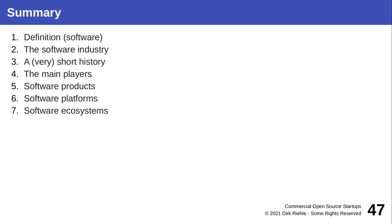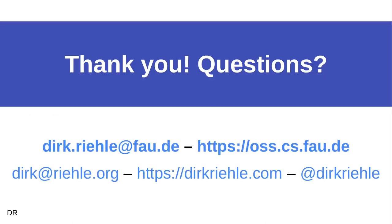So that's it for this first lecture. We talked about what software is and how it's provided by the software industry, its main players. We got a first glimpse at software products in general and different types — most notably platforms and applications, how together they form ecosystems, and how that is where the wars in the software industry take place. Thank you very much for your time and attention, and see you in the next session.